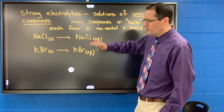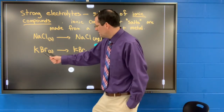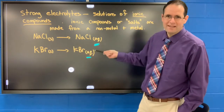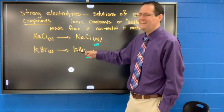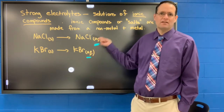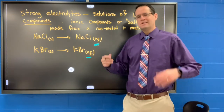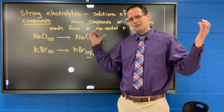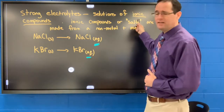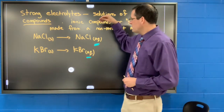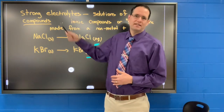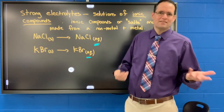Let's look at another example: potassium bromide. Here we see an arrow and we're making a solution. Potassium (K) is on the left of the periodic table, and bromine (Br) is on the right. When you have a metal and a non-metal combining to make a compound, we say that substance is an ionic compound, or a salt. When it dissolves into water, it strongly conducts electricity — we classify that as a strong electrolyte.